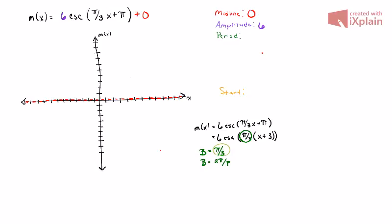I can use substitution to drop pi thirds in for b, so now I have pi thirds equals two pi over p. Using cross multiplication gives us p times pi equals six pi. Dividing both sides by pi gives us p equals 6.